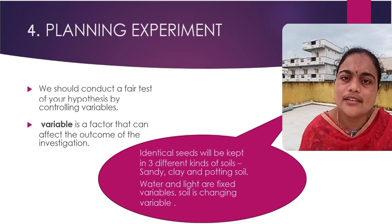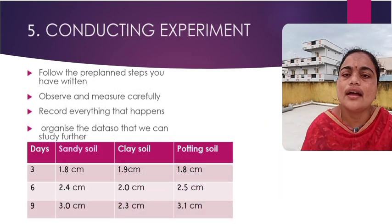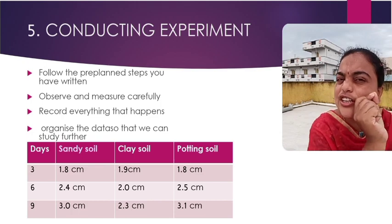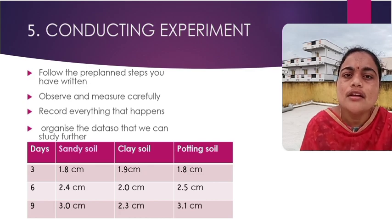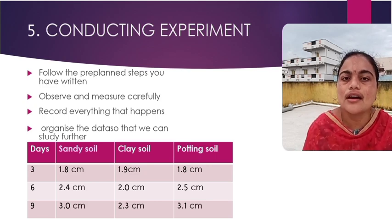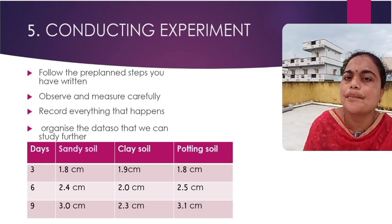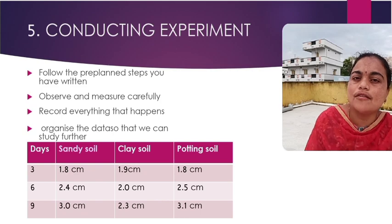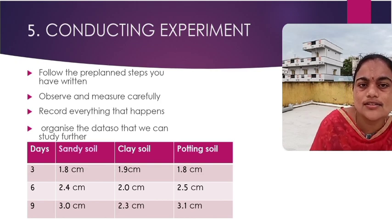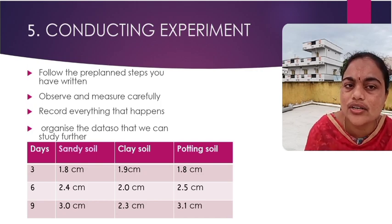We have to conduct the experiment. Whatever procedure we have written, we follow it step by step — this is a very crucial step. These pre-planned steps must be implemented practically. We will now observe the bean seeds' germination over nine days. After nine days, the plantling grown in sandy soil measured 3 centimeters, in clay soil 2.3 centimeters, and in potting soil 3.1 centimeters.